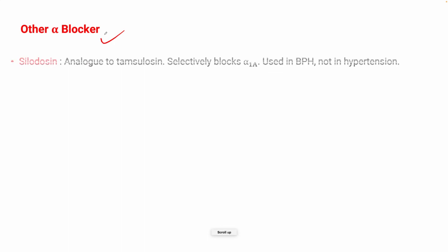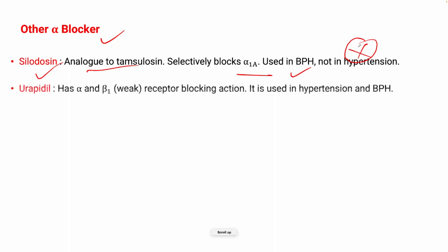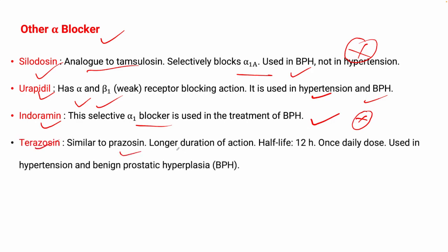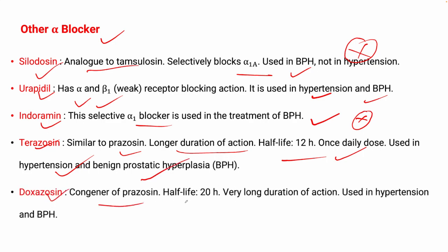Other alpha blockers: Silodosin is an analog of tamsulosin — selectively blocks alpha-1a — and is used in BPH but not in hypertension. Urapidil acts on alpha and beta-1 receptors and is used in both hypertension and BPH. Indoramin is a selective alpha-1 blocker used only in BPH, not in hypertension. Terazosin is similar to prazosin with a longer duration of 12 hours, used in hypertension and BPH. Doxazosin is a congener of prazosin with a half-life of 20 hours, also used in hypertension and BPH.